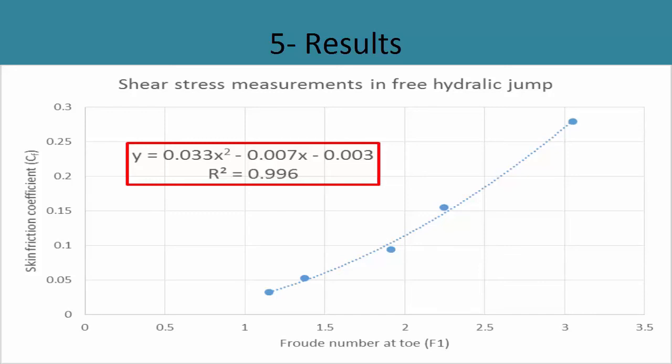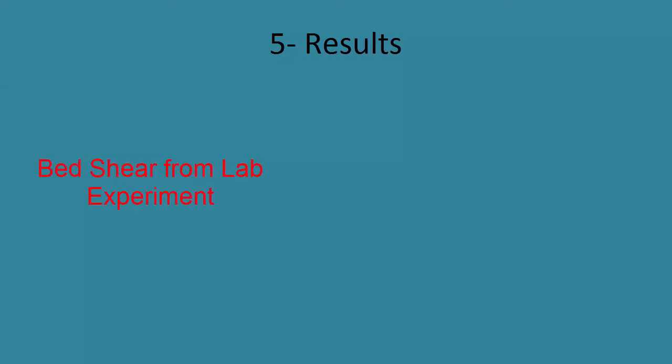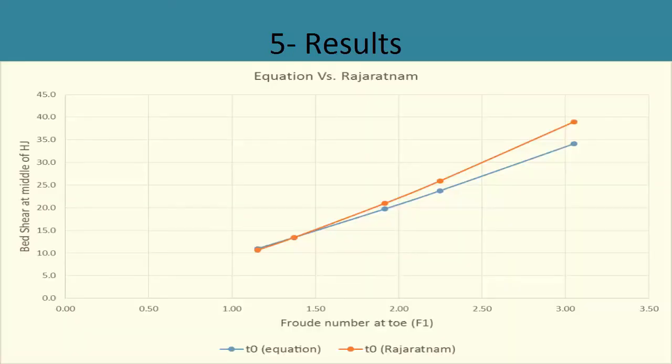For free hydraulic jump, we developed this chart. Now if we know Froude number for any free hydraulic jump on the flume, we can directly get shear stress. You enter with the value of Froude number and get skin friction coefficient, or you can use this equation directly. After that, use this equation to get shear stress. Our calculated bed shear stress is in the middle of the hydraulic jump. According to Roger Rotenam 1965, this represents 65% of the average and 20% of the maximum value of the bed shear stress under the jump. So we compared our results to Roger Rotenam's results, and the two bed shear values were very close. This is clear from this chart.